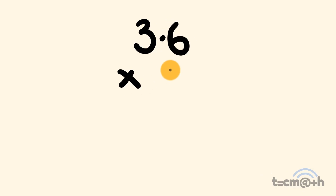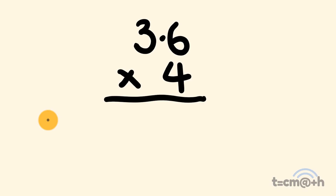We'll start off with something nice and easy: 3.6 multiplied by 4. The trick with doing multiplication involving decimals is we're going to treat this like a normal multiplication — that is, 36 multiplied by 4 — and then we're going to deal with the decimals at the end. So the first thing we're going to do is 36 multiplied by 4, however you usually would do this. I'm going to go the way that you're probably being taught in school.